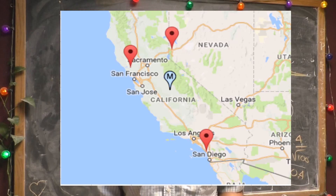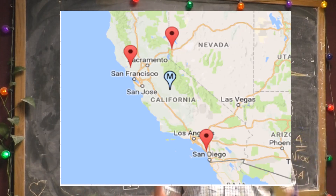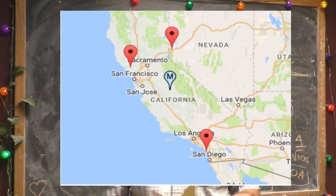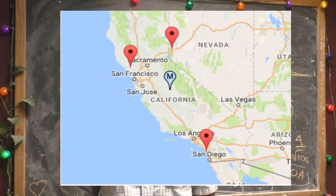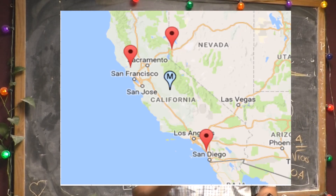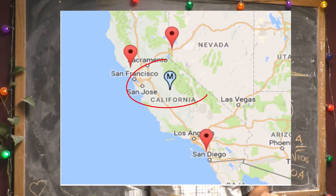So what I did was I said, let's find what's called the geographic midpoint of those towns. Let's use this as an example right here — this map shows three towns in and around California, and it's got this geographic midpoint here in the middle with the M on it.